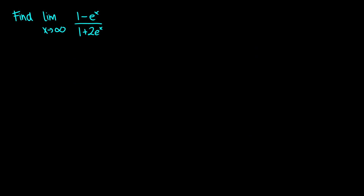Here's the last one: let's find the limit as x approaches infinity of 1 minus e to the x over 1 plus 2 e to the x. This question is not as hard as the previous one. What's important to note is function growth. In the numerator, the fastest growing term is negative e to the x, so we get negative e to the x on top. In the denominator, the fastest growing term is 2 e to the x. Simplifying, we get negative one-half. So that is the limit.